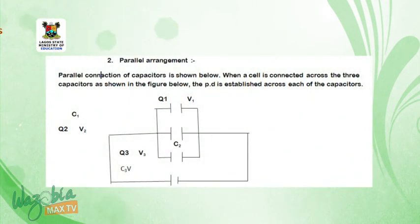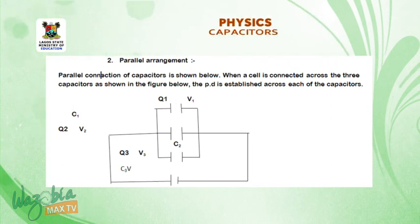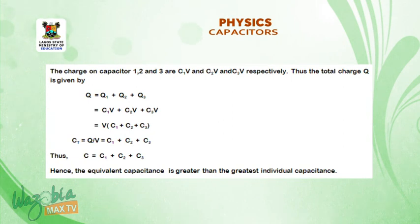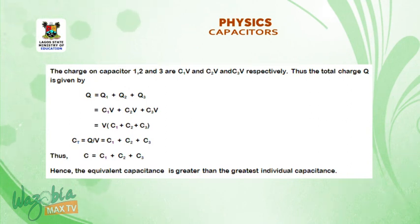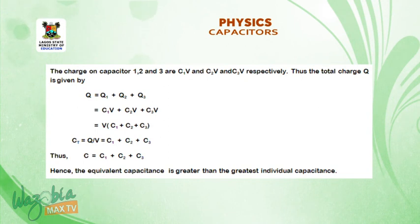Parallel arrangement of capacitor. Check the diagram — you have C1, C2, and C3 arranged in parallel format. The charge on capacitor 1, capacitor 2, and C3 are C1V, C2V, and C3V respectively. Thus, the total charge Q is given by Q equals Q1 plus Q2 plus Q3, which equals C1V plus C2V plus C3V. Factoring V outside gives Q equals V times (C1 plus C2 plus C3). Dividing through by V: C total equivalent equals C1 plus C2 plus C3. Hence, the equivalent capacitance is greater than the greatest individual capacitance.